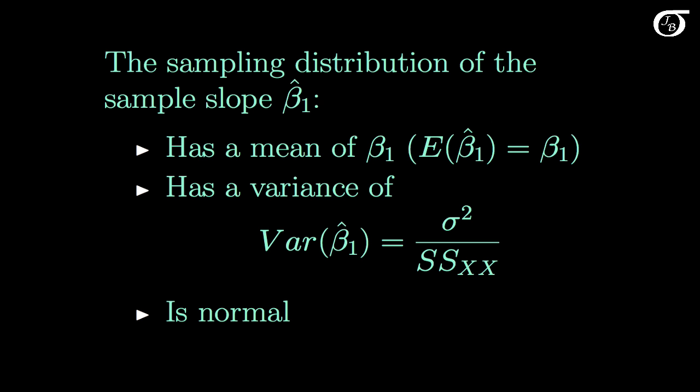The sample slope beta 1 hat has a mean of beta 1. The expectation of beta 1 hat is beta 1. Or in other words, beta 1 hat is an unbiased estimator of beta 1. And it's not too difficult to show that the variance of beta 1 hat is equal to sigma squared over the sum of squares for x. And we also know that under the assumptions of our model, the sampling distribution of beta 1 hat is normal.